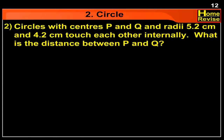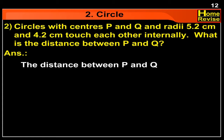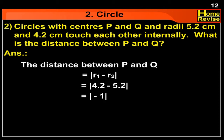Circles with center P and Q and radii 5.2 cm and 4.2 cm touch each other internally. What is the distance between P and Q? Answer: The distance between P and Q would be mod of R1 minus R2, i.e., mod of 4.2 minus 5.2, which is equal to mod of minus 1, i.e., 1 cm.